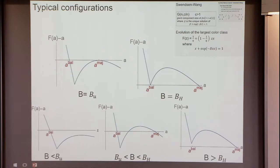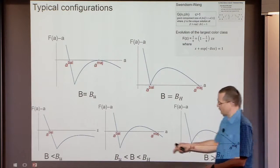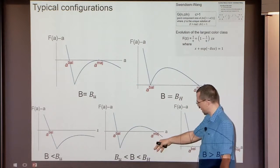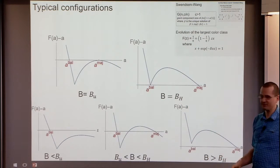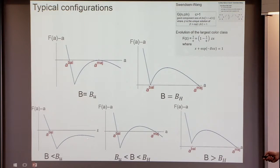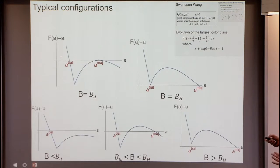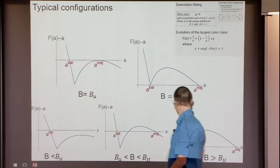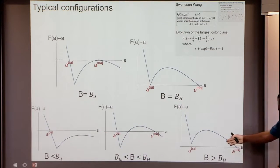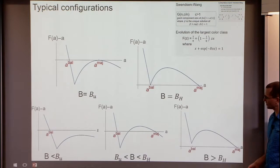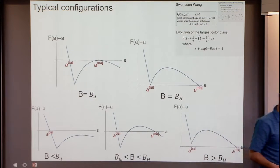There is a function f that explains how the dynamics behaves assuming there is just one large color class. Looking at f below the first threshold: there is just one fixed point. At the first threshold: two fixed points. Between the thresholds: two fixed points. Beyond the second threshold: just one fixed point again. This explains why the chain is fast below the first threshold and above the second: in each of those regimes there is just one fixed point and the dynamics goes there. Between the thresholds, two fixed points fight each other.